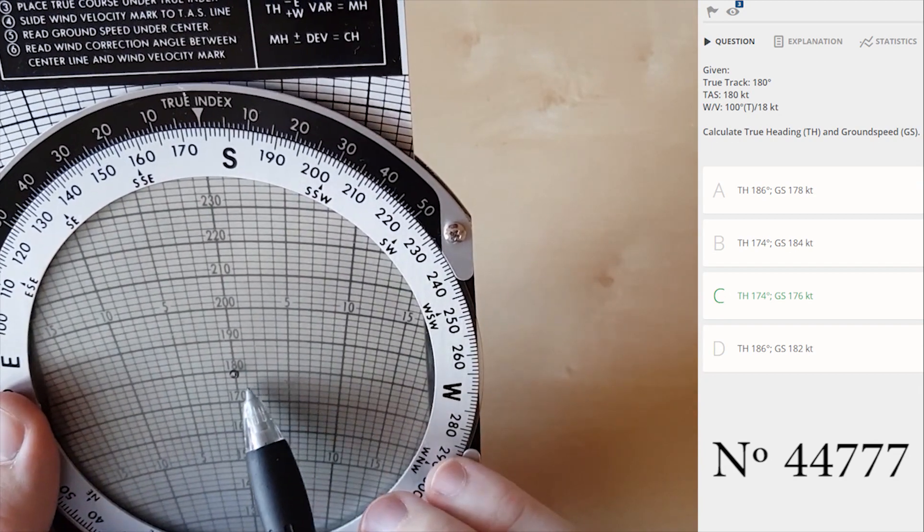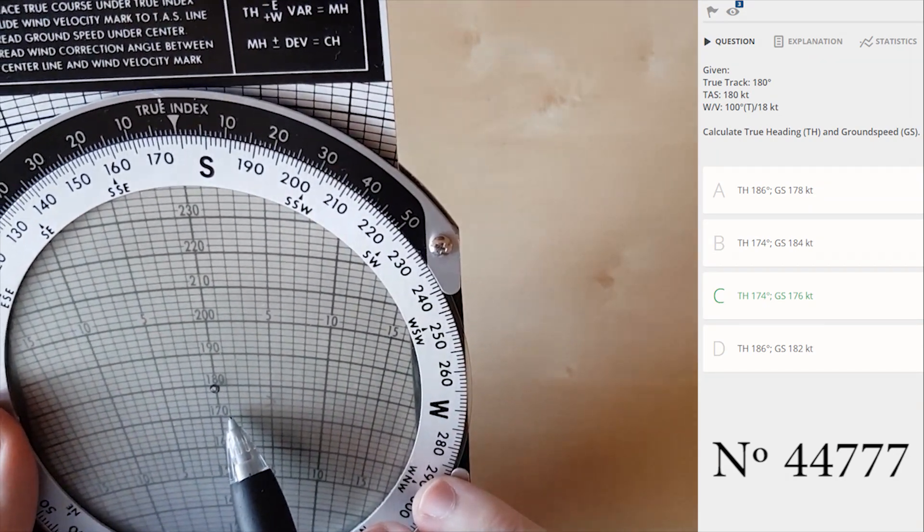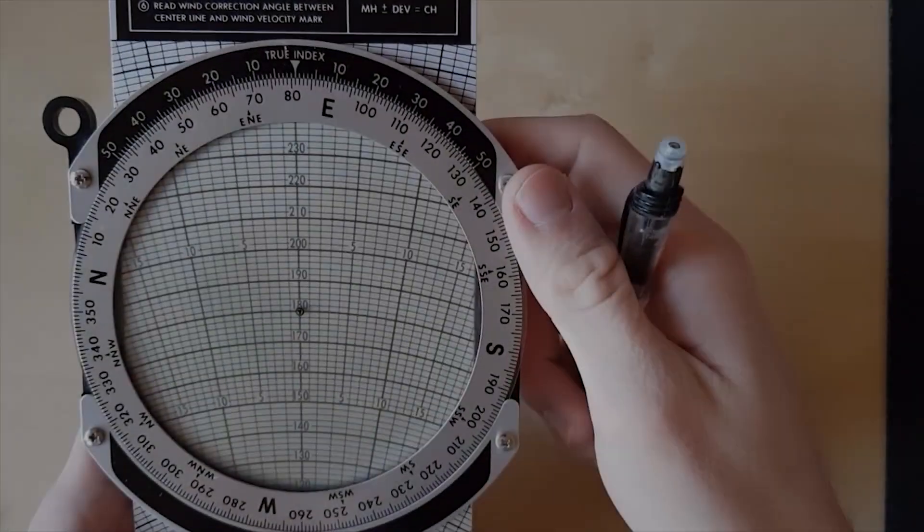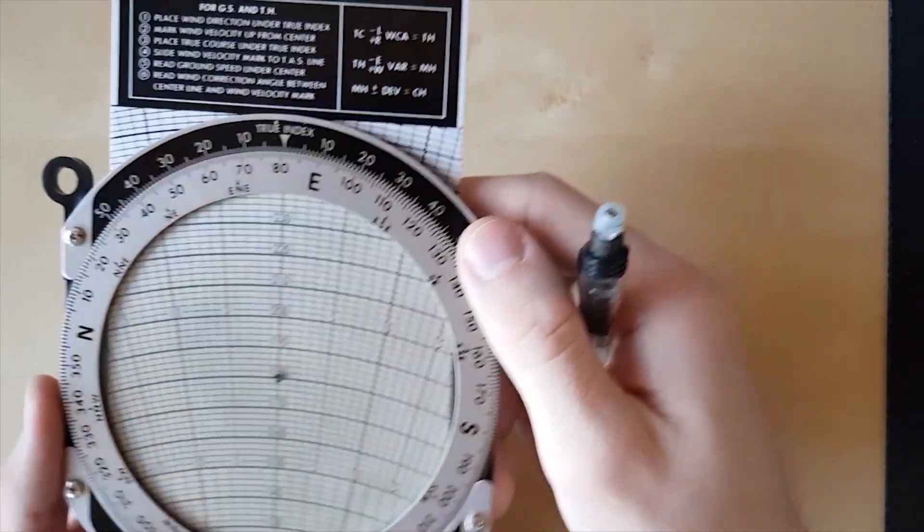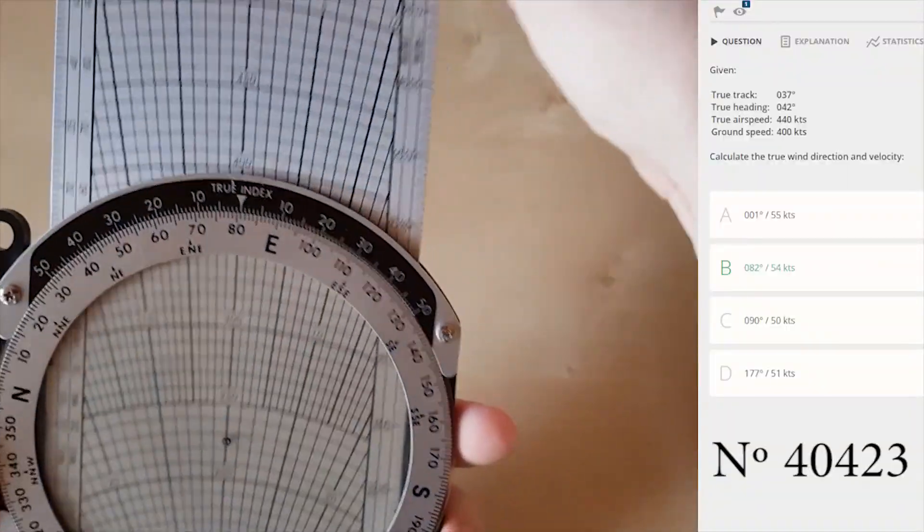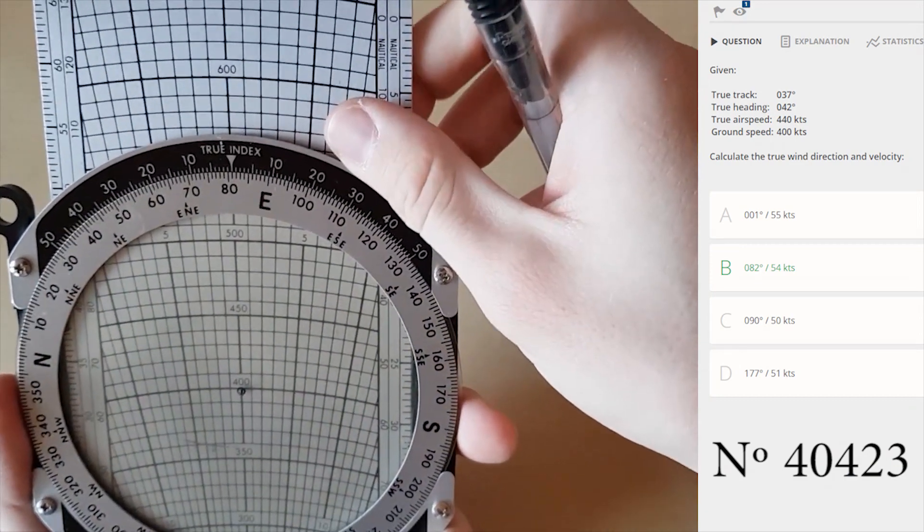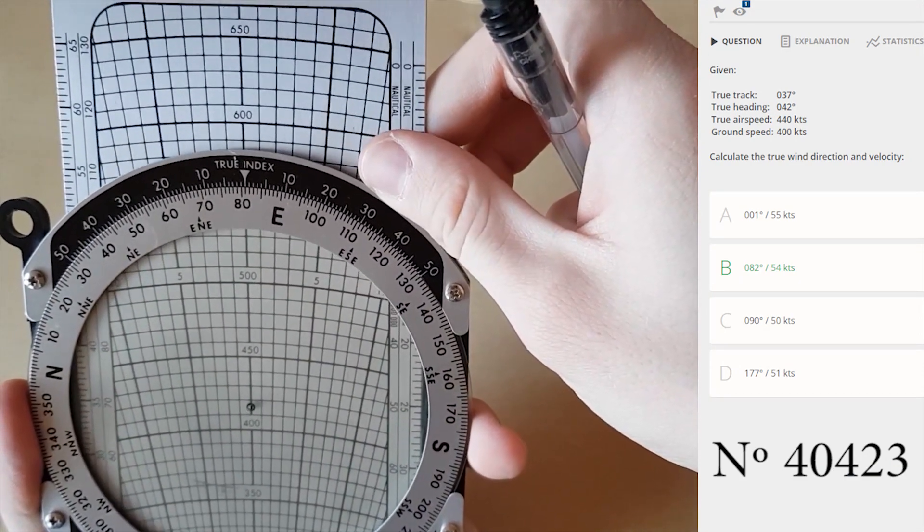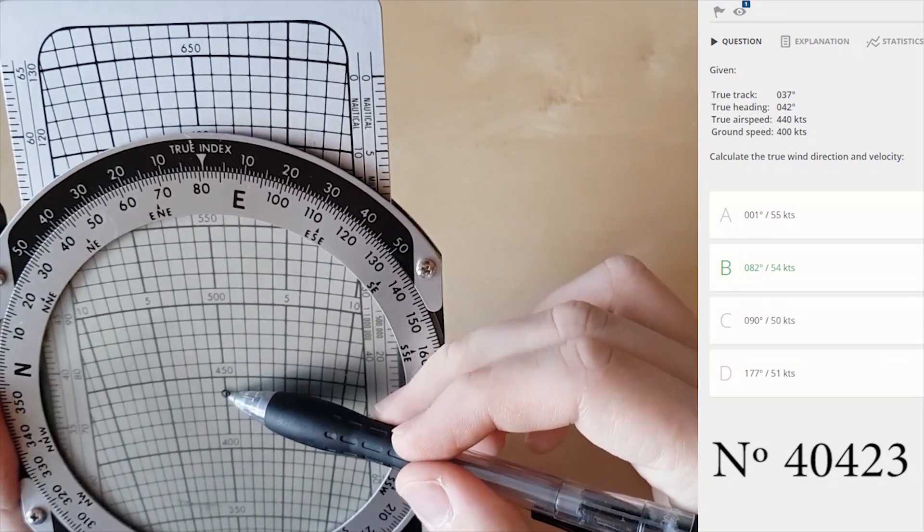In the next question we need to calculate the true wind direction and velocity. As you can see there are bigger numbers so we need the other side of the plate to deal with bigger problems. The first step is to put the true airspeed which is 440 knots right here.